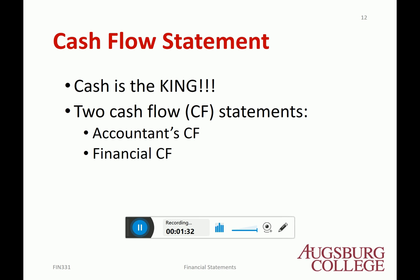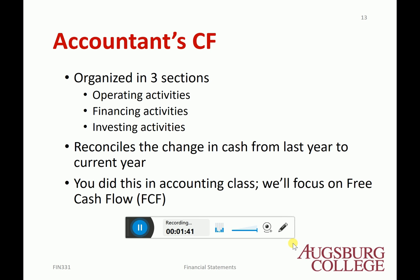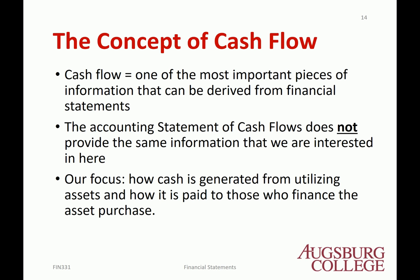There are two different types of cash flow. One is the accounting cash flow, the other is financial cash flow. The accounting cash flow has three sections: one is operations, number two is financing, number three is investing — you probably learned it in accounting class. It basically reconciles the change in cash from last year to current year. We'll now focus on free cash flow, also called the financial cash flow.